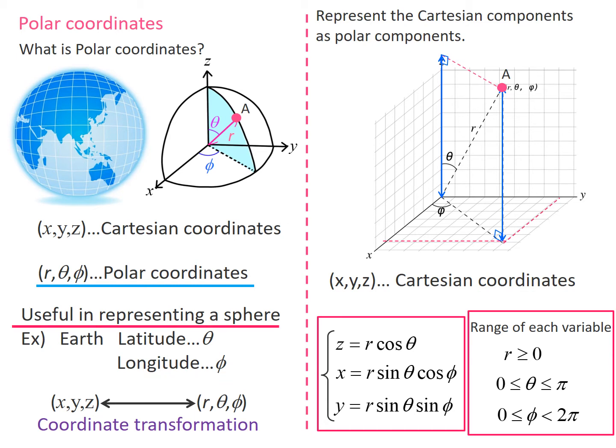Thus, polar coordinates are useful for representing a spherical distribution. Since we consider atomic systems in quantum chemistry, the polar coordinates are sometimes more convenient than Cartesian coordinates.